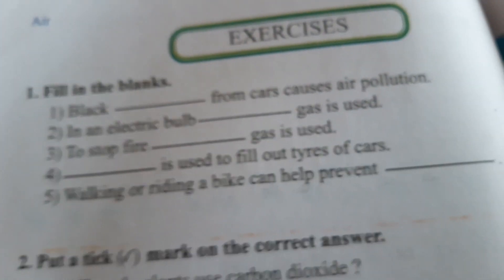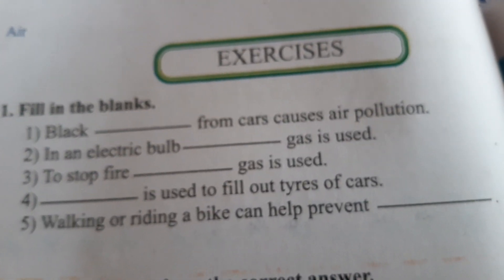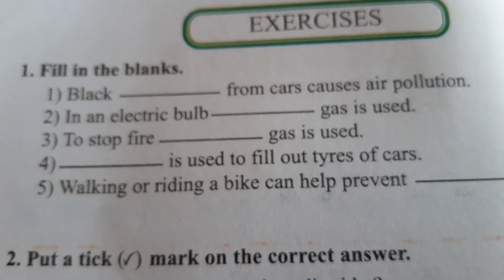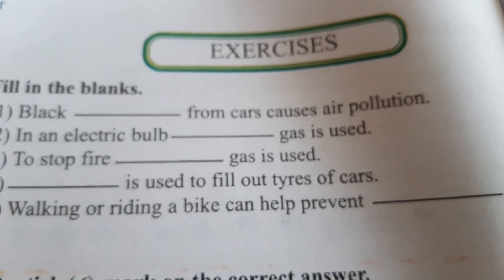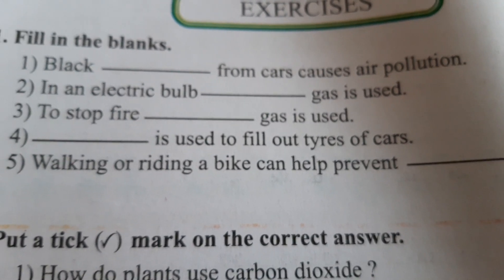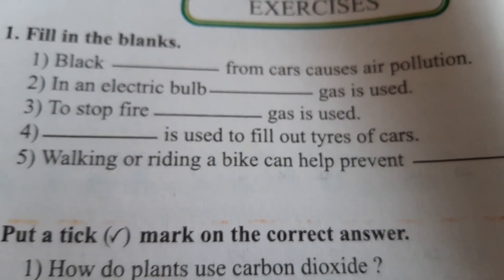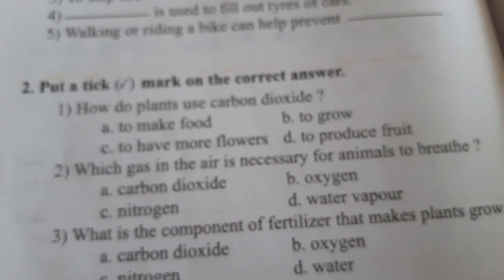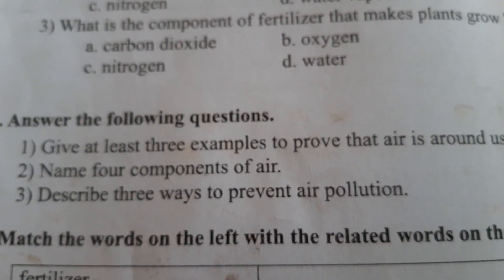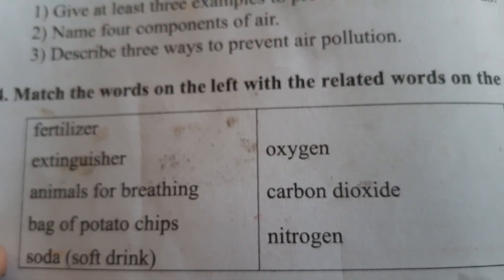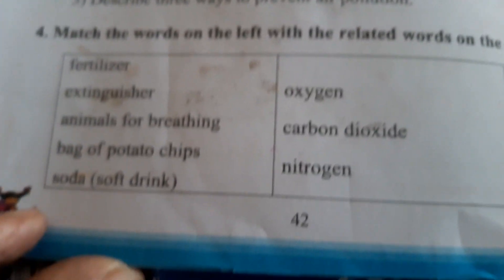Read every line and then come to the exercise. Once you finish reading the full chapter you can easily do the exercise. For filling in the blanks: black smoke from cars causes air pollution; nitrogen gas is used to stop fire; carbon dioxide gas is used; and air is used to fill out tires of cars. Walking or riding a bike can help prevent air pollution. Then tick mark the correct answers. I have written the answers for the 'answer the following questions' section so you can learn them. Finally, match the words on the left with the related words on the right.